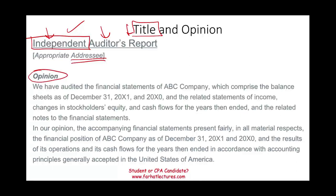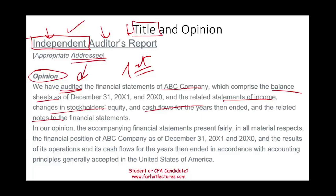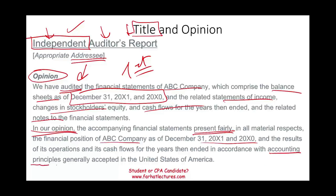Next is the opinion, which is now the first paragraph to illustrate its importance. In the opinion, we tell users what we did: we audited the financial statements of the company, listing the balance sheet, income statement, stockholders' equity, cash flows, and notes — which are an integral part. We state that those financial statements present fairly, in all material respects, the financial position of ABC Company as of the date, the results of operations, and cash flows, in accordance with generally accepted accounting principles (GAAP) in the U.S.